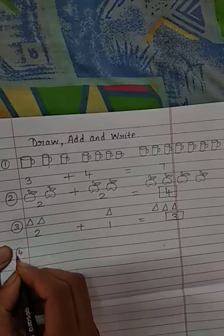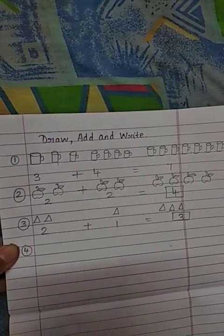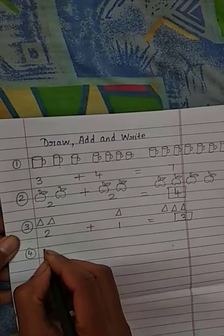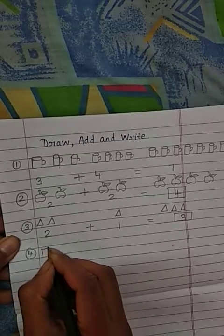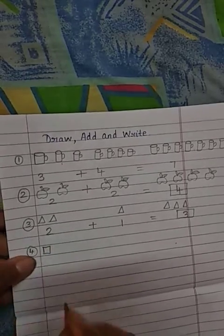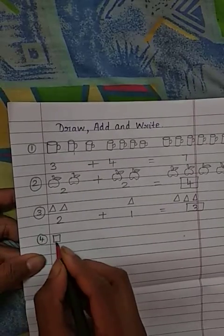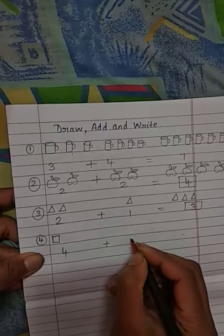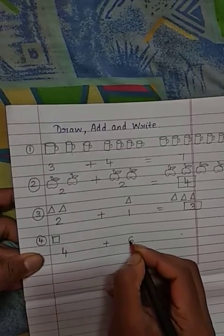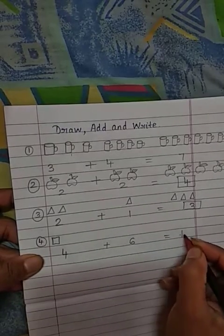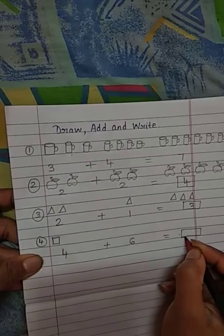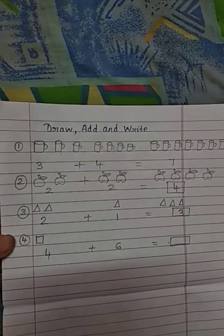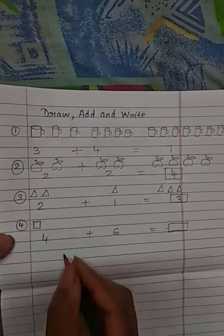Now we will see another example. Let's say suppose triangle is there, we will take all the shapes. Let's say square. We will take the square object. Now 4 plus 6 equals to box. So 4 plus 6 equals to box I am giving here. Understood children, I hope the video is clear.